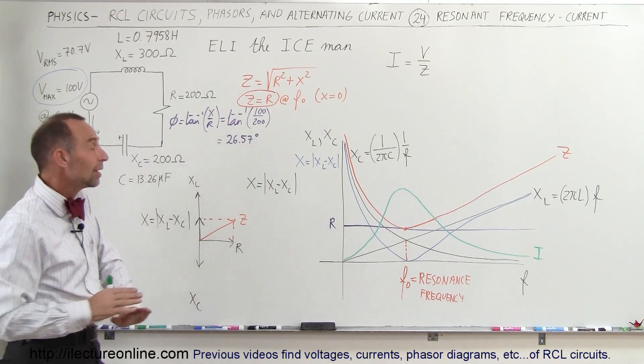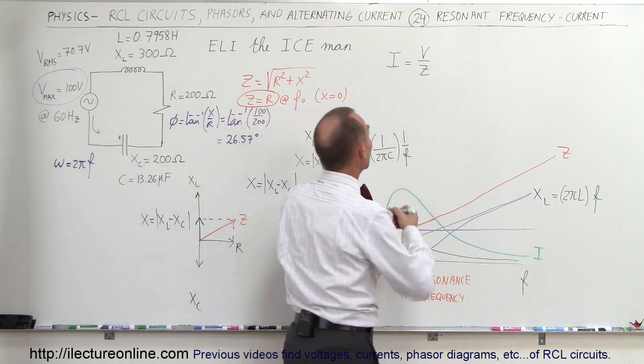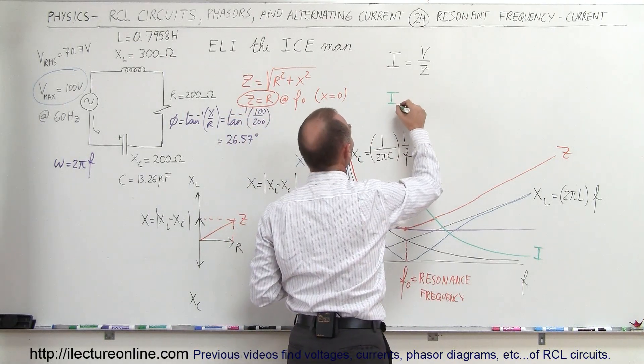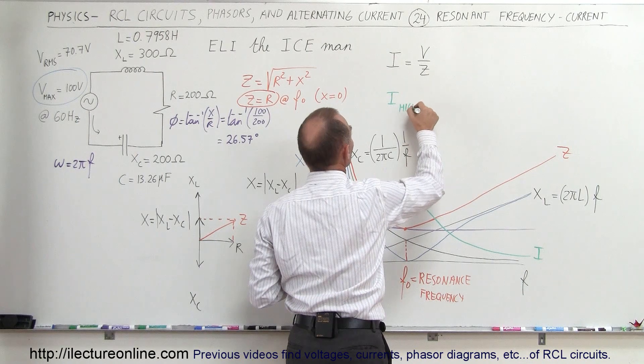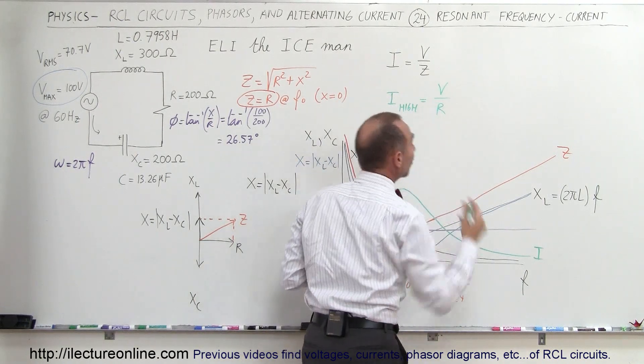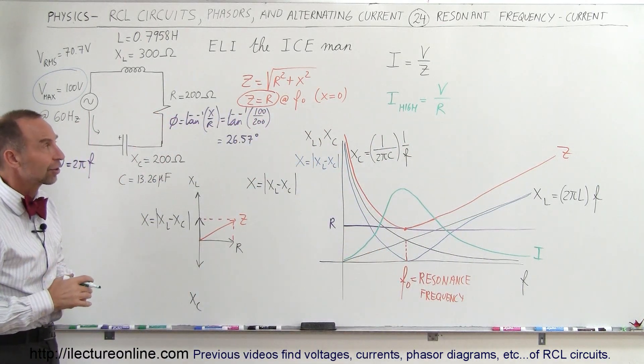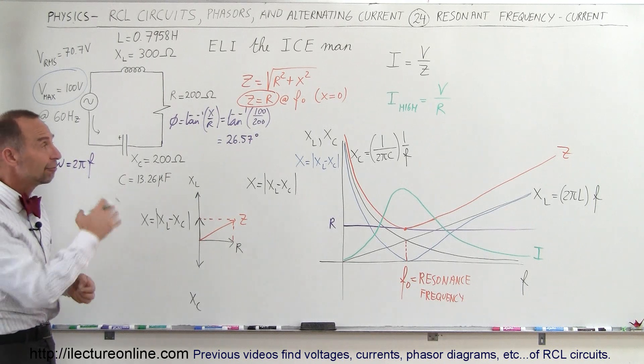but all that we need to realize here is that maximum current is reached when Z becomes equal to R. So this then becomes Imax, the highest current, is equal to the voltage of the supply divided by the resistance, because that's when Z becomes equal to R, and that's when we reach our highest current in the circuit. And that's the key to take back from this particular concept,